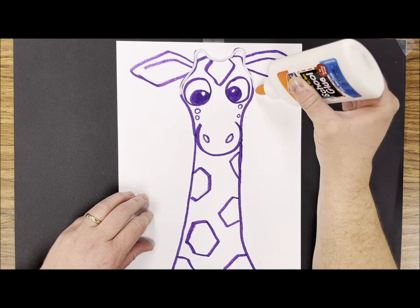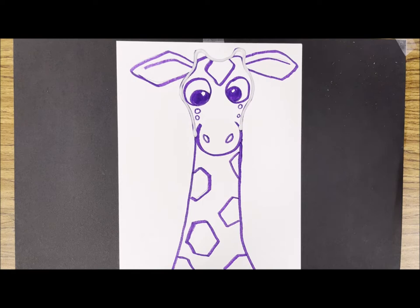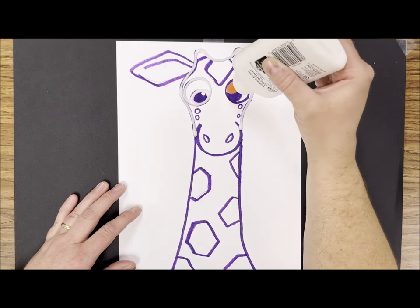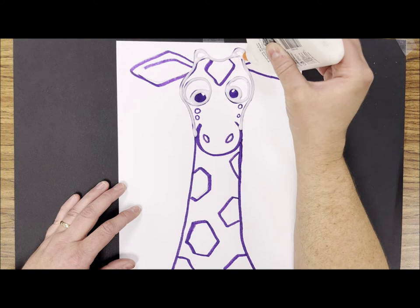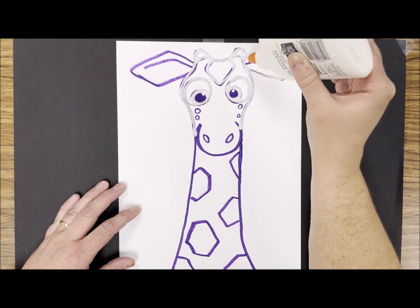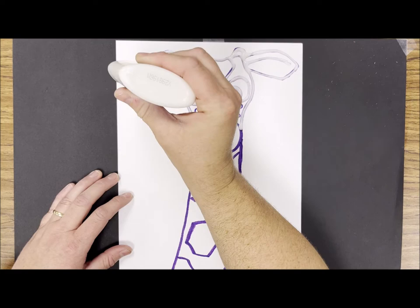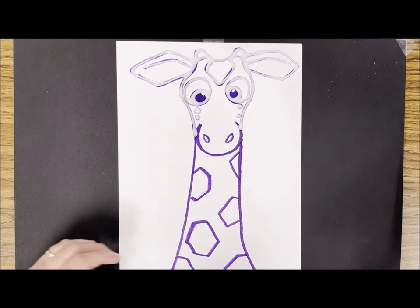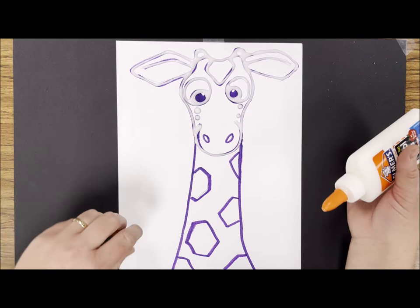Notice that I'm taking my time and I'm holding the tip of the glue bottle slightly above the paper. I'm not touching the glue bottle to the paper. I'm taking my time and when I'm ready to stop I simply stop squeezing and pick up the bottle.